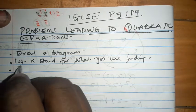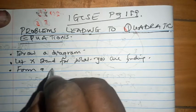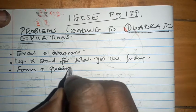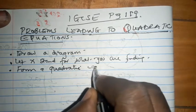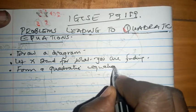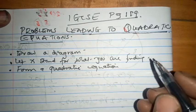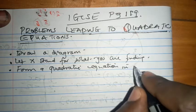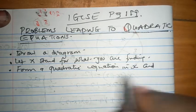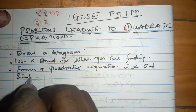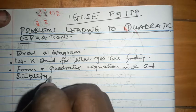And then from there, you form a quadratic equation in X and simplify it.